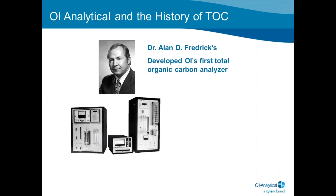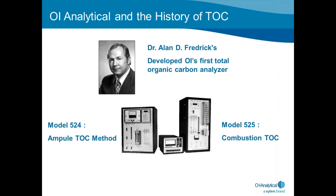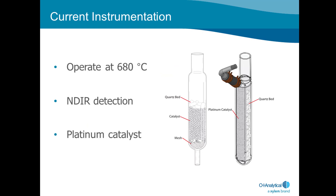As for OI Analytical's history with TOC, Dr. Alan Fredericks developed OI's first total organic carbon analyzer, the models 524 and 525 — you see on the right-hand side the combustion TOC. In current instrumentation today, systems operate at 680 degrees C and for the most part use NDIR as the detection technique, oxidizing samples over a platinum catalyst. The combustion tube design can be found in most high temperature catalytic oxidation systems on the market today, and by and large most combustion TOCs follow these basic criteria for determination of TOC.